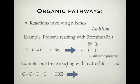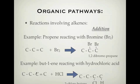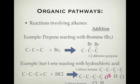Our next example is but-1-ene reacting with hydrochloric acid. But- means four carbons, and 1-ene means the double bond is between the first and second carbons. When reacting with hydrochloric acid, the double bond breaks — a H goes on one end and the Cl goes on the other — and we form 2-chlorobutane. However, if the chlorine goes on the first carbon and the hydrogen on the second instead, that can happen as well. So what we actually get is 2-chlorobutane or 1-chlorobutane forming — both will be formed from the same reaction.